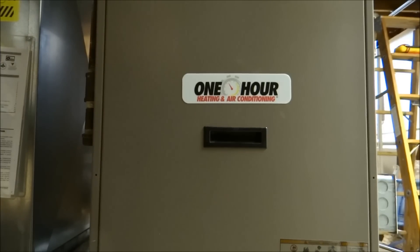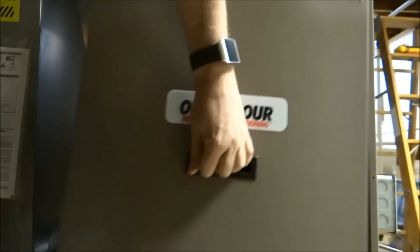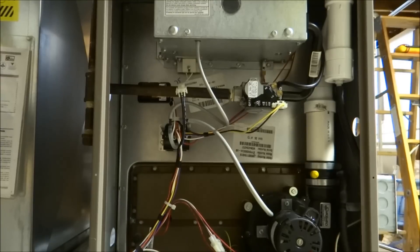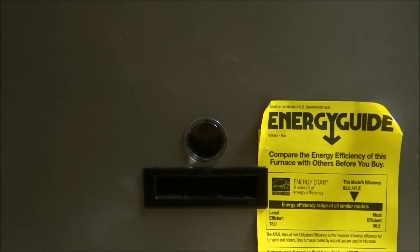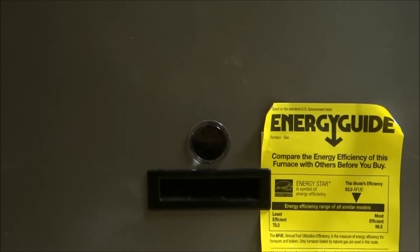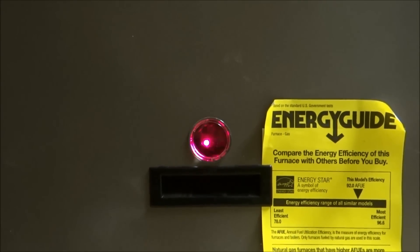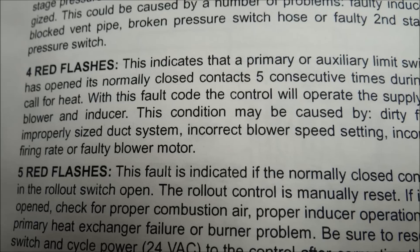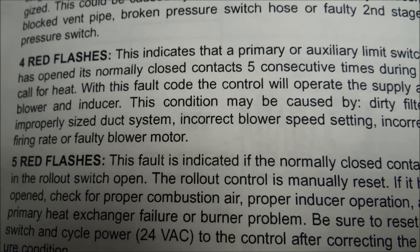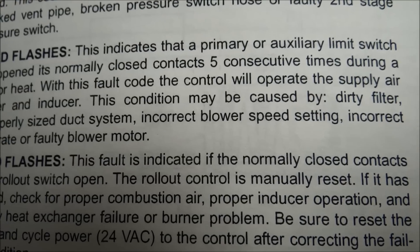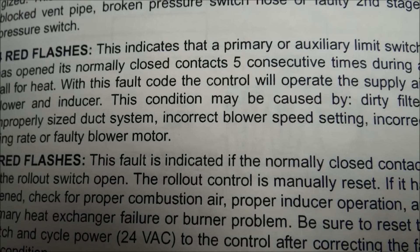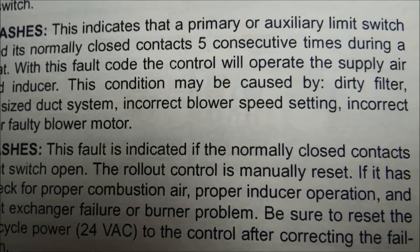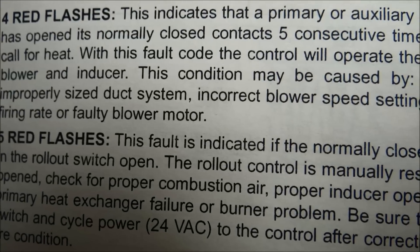This is my furnace. Take the cover off — I'm not a furnace technician. Let's take a look down here. This is the alarm that I'm getting: it's four flashes red, which is an indication of something. According to the book, four red flashes indicates a primary or auxiliary limit switch has opened its normally closed contacts five consecutive times during a call for heat. With this fault code, the control will operate the supply air blower and inducer.